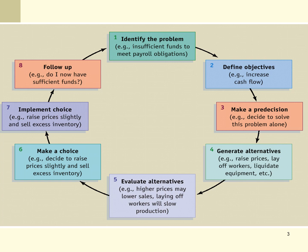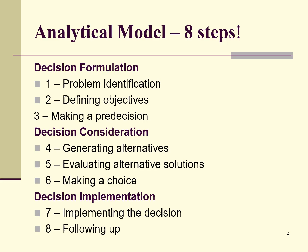If we truly want to make objective decisions, this is a good model to use because it's based on getting around our natural tendencies as people to make mistakes in our thinking. It is an analytical model that helps us try to be more objective. Notice there are three major phases: decision formulation — identify the problem, define objectives, and make pre-decisions about who is involved; then consider the decision itself — generate alternatives, evaluate them, and make the choice; and finally, implement the decision and follow up to see if it's working.